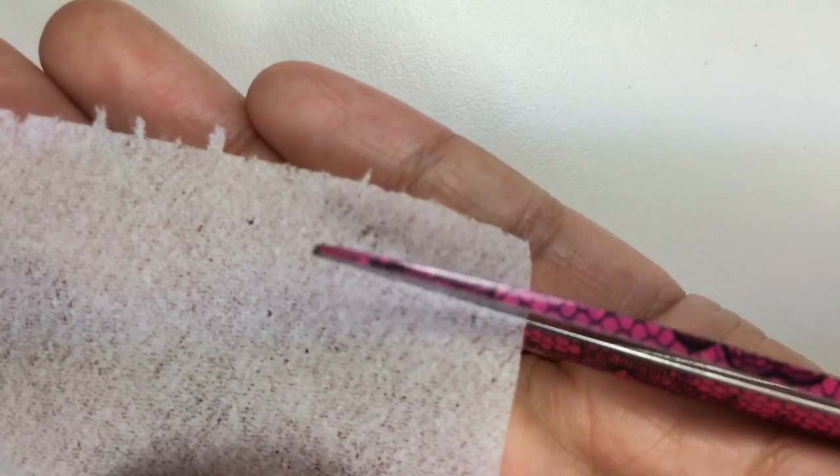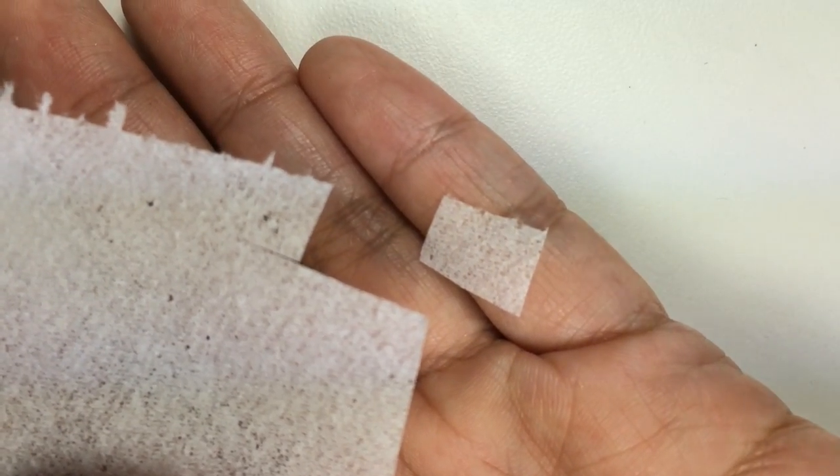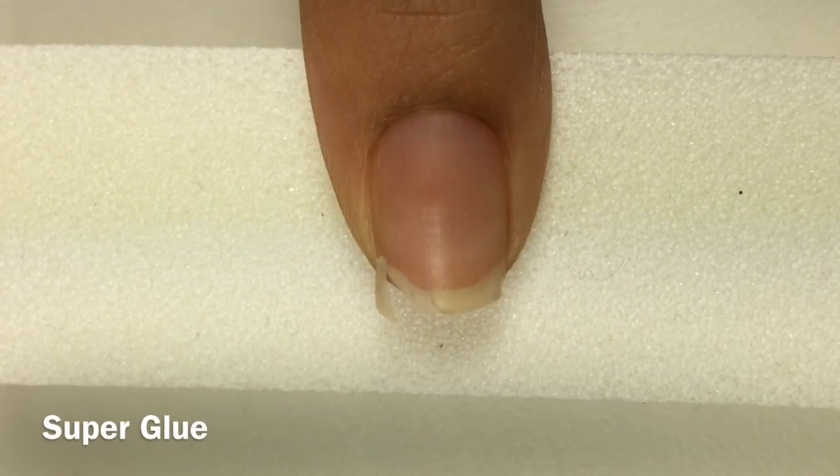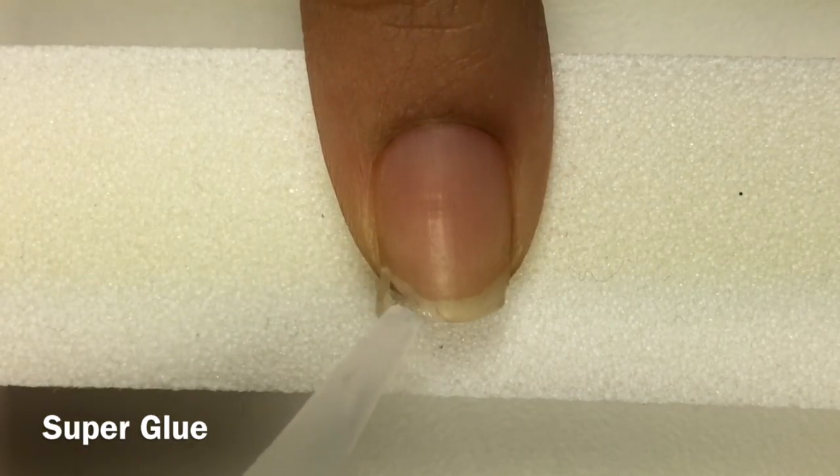I'll cut out a piece in a rectangle shape. You can either use super glue or nail glue for this repair. I use super glue for this tutorial. Just apply it to your break and use a toothpick to glue the two pieces together.